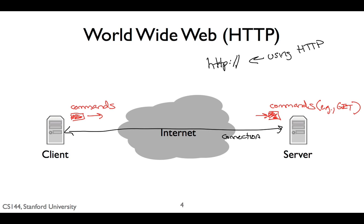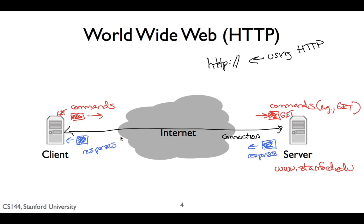HTTP was designed to be a document-centric way for programs to communicate. For example, if I type 'http://www.stanford.edu' in my browser, the browser opens a connection to the server www.stanford.edu and sends a GET request for the root page of the site. The server receives the request, checks if it's valid, and if the user can access that page, sends a response. The response has a numeric code associated with it. For example, if the server sends a 200 OK response to a GET, this means that the request was accepted and the rest of the response has the document data. A 200 OK response for www.stanford.edu would include the hypertext that describes the main Stanford page.